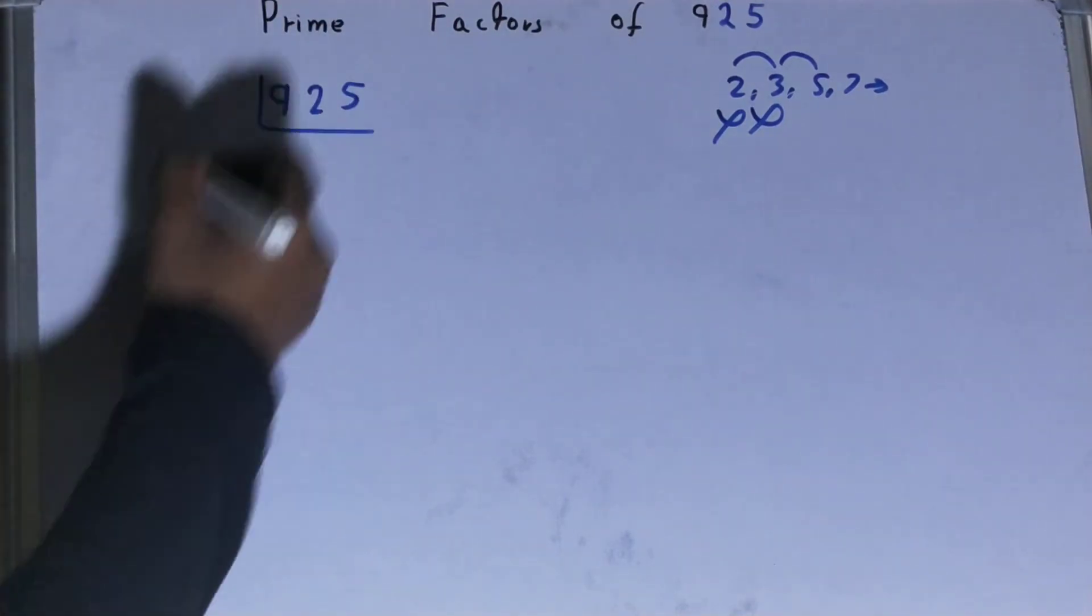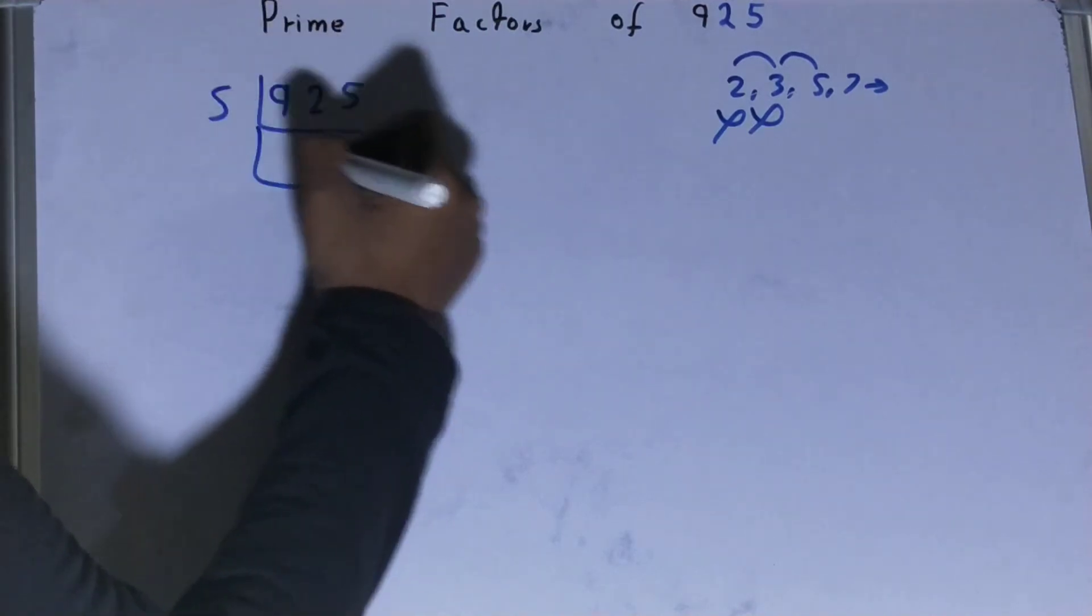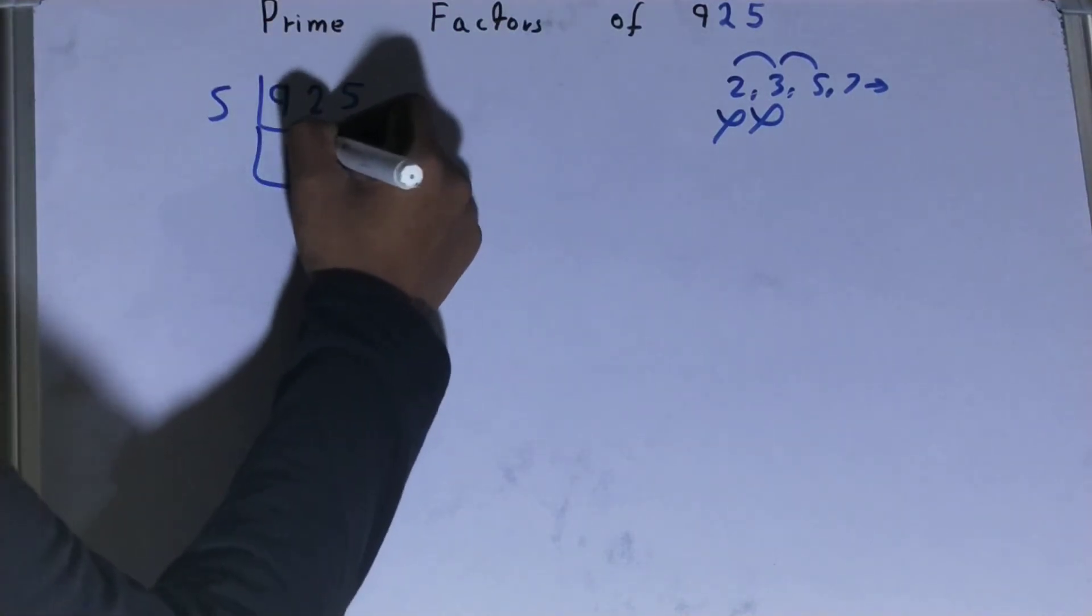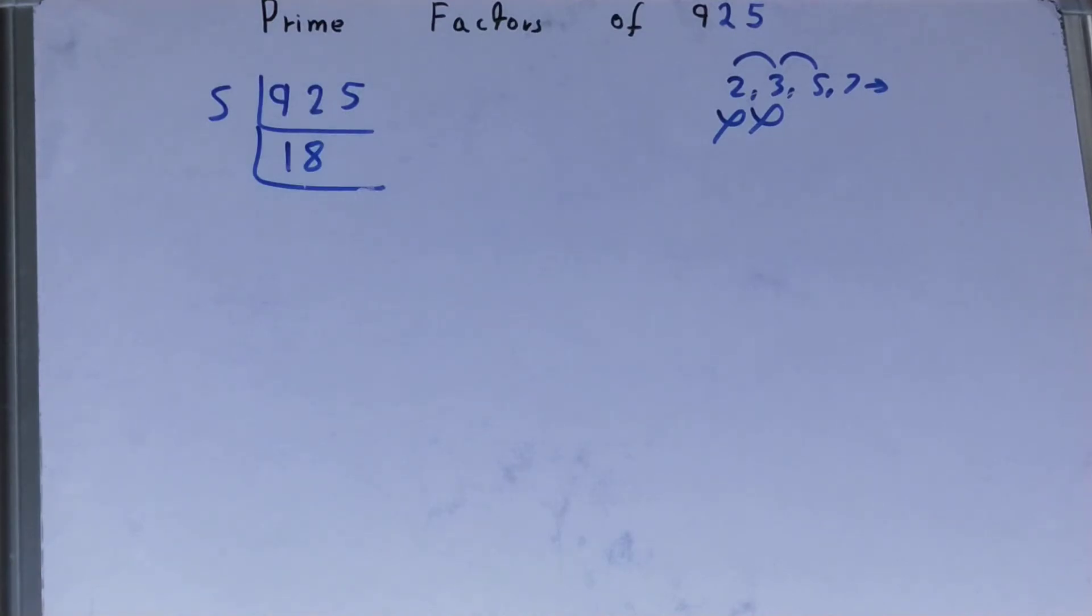...5. So divide it. 5 goes into 5 once, into 42 is 8, into 25 is 5. So you will be left with 185. Now, is this 185...